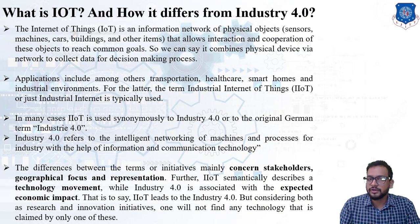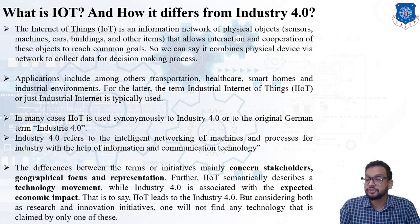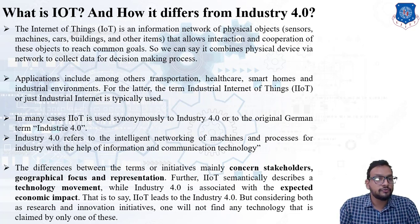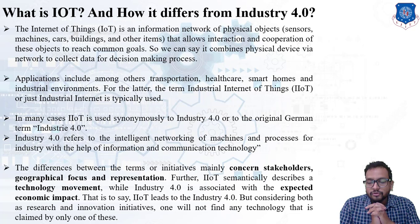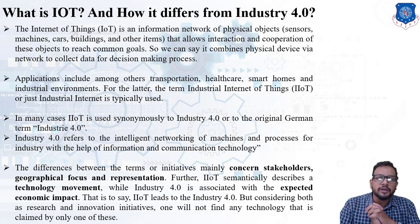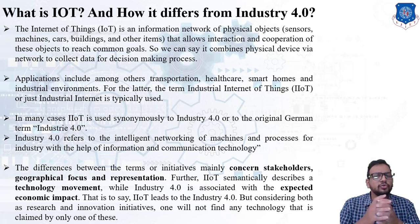The first question is: what is IoT and how it differs from Industry 4.0? You have a basic overview of Industry 4.0 — you have studied the backgrounds and history, that is Industry 1, Industry 2, Industry 3, and Industry 4. Internet of Things, as the name itself suggests, makes use of the Internet — that is, a network or cyber system. It combines physical devices via a network or via the Internet in order to collect data for the decision-making process.